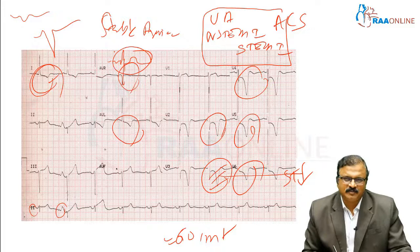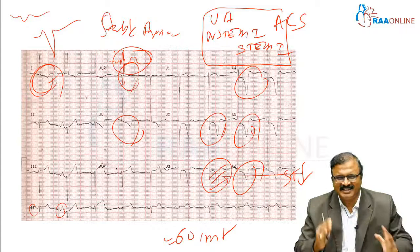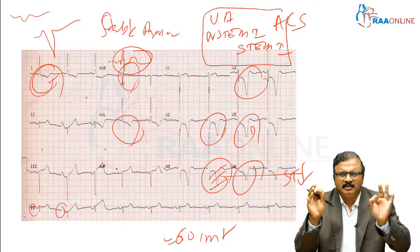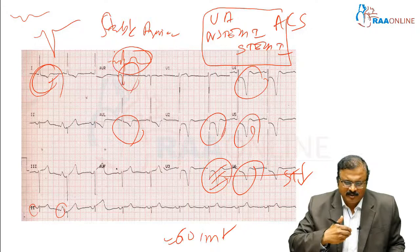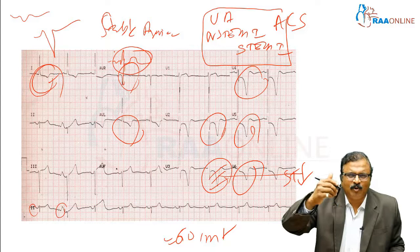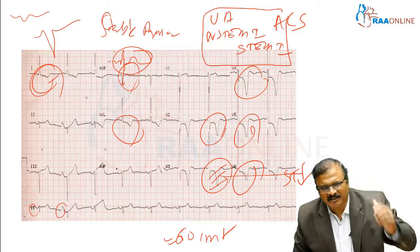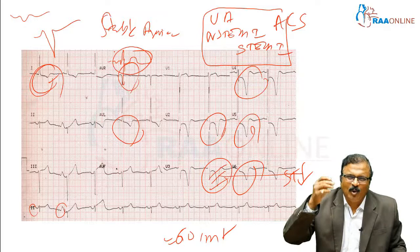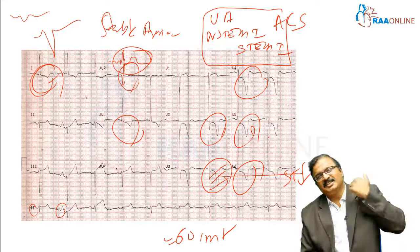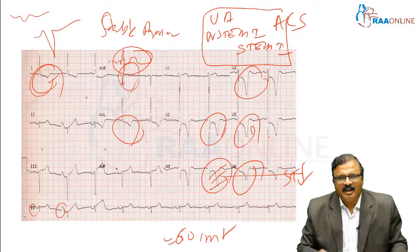So the learning point from this ECG is: not all T inversions indicate coronary artery disease. Here you can see the QRS morphology — in V5, there are 5 small boxes of R wave, which is 25 mm. In V6, there are 6 small boxes, which is 30 mm of R wave. So there is LVH — left ventricular hypertrophy.